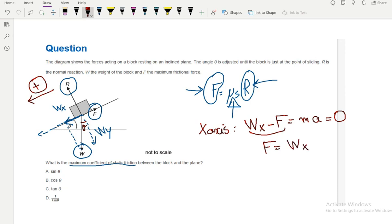So the friction is equal to Wx, and Wx, you can see here that this is Wx. So this is the opposite side, which means Wx is the weight, which is W times sine theta. So we found the friction.